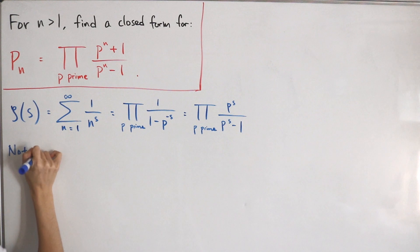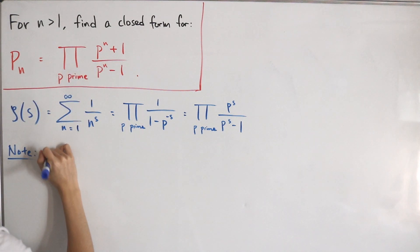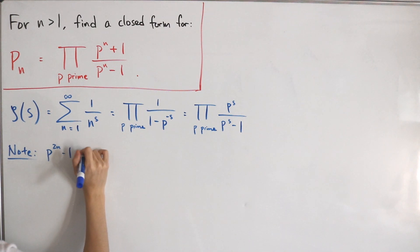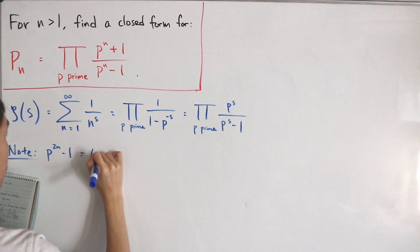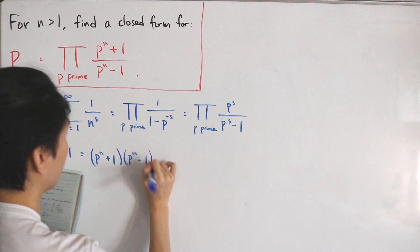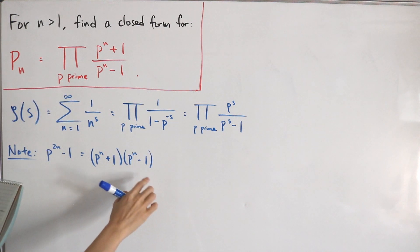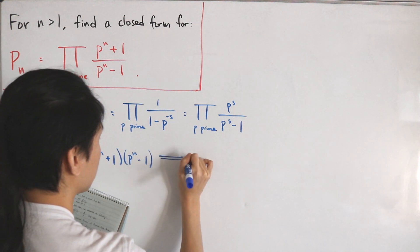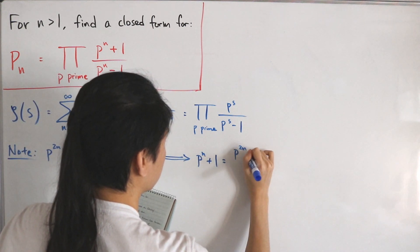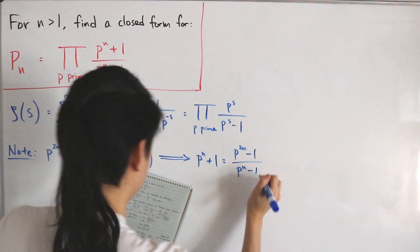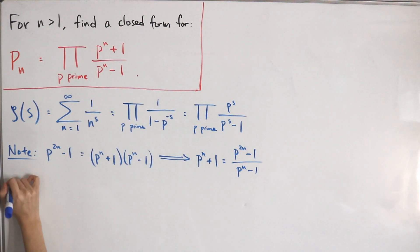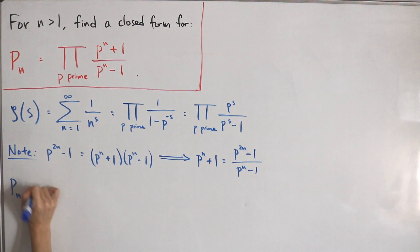Here's a substitution we'll use later: p^(2n) minus 1, which by difference of squares equals (p^n + 1)(p^n - 1). Dividing both sides by (p^n - 1) gives p^(n+1) = (p^(2n) - 1) divided by (p^n - 1). This is the substitution we'll place into the product expression.